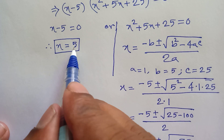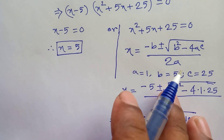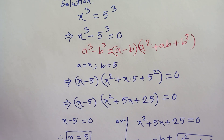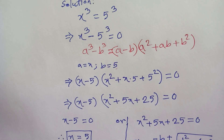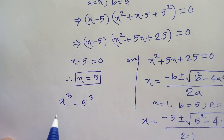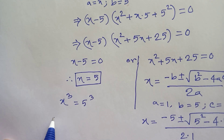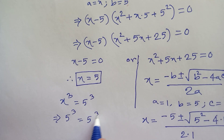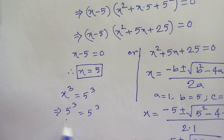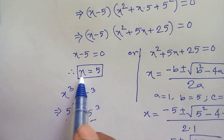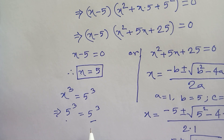We check our original equation: x cubed equals 5 cubed. Since x equals 5, we get 5 cubed equals 5 cubed, so both sides are equal. Our final value of this equation is x equals 5. Thanks for watching — please subscribe to my channel for more videos, bye bye.